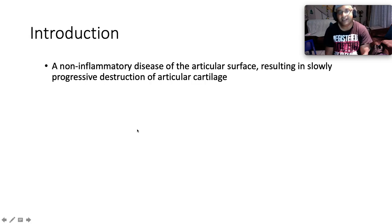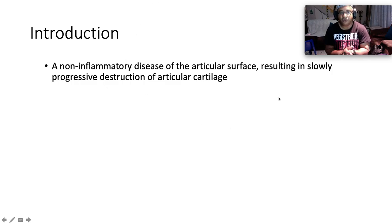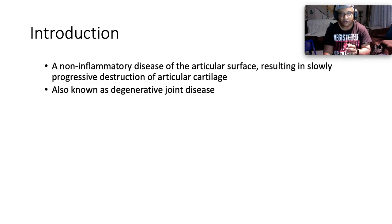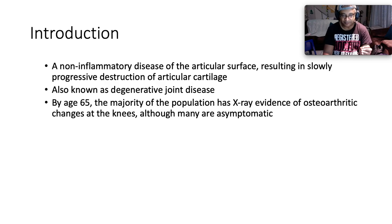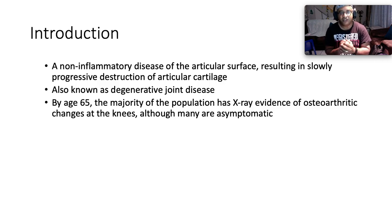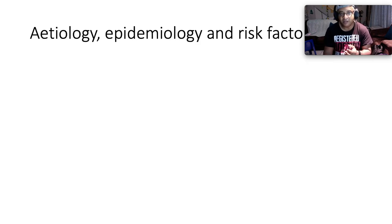Osteoarthritis is a non-inflammatory disease of the articular surface, resulting in slowly progressive destruction of articular cartilage. It is also known as degenerative joint disease. By the age of 65, the majority of the population has X-ray evidence of osteoarthritic changes at the knees, although many are asymptomatic.